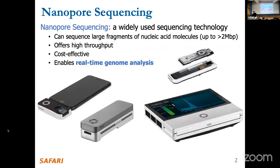This is about genome analysis, which was also mentioned in last week's lecture. Nanopore sequencing is one of the widely used sequencing technologies. It has several benefits: it can sequence large fragments of nucleic acid molecules — DNA up to 2 million bases — it offers very high throughput, it is relatively cost-effective, and it provides unique benefits such as real-time genome analysis.